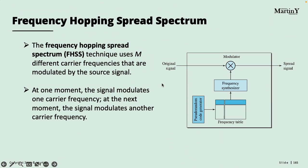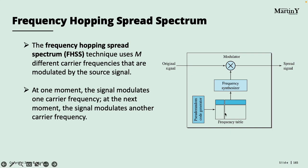Going back to the previous figure, the original signal passes through a modulator that already has the frequency to use. First, we choose a specific number — for example 101 — which corresponds to a frequency of 600 hertz. We select this frequency from the table, then pass it through the frequency synthesizer, which generates the carrier frequency. This process repeats over and over for every portion of the message.